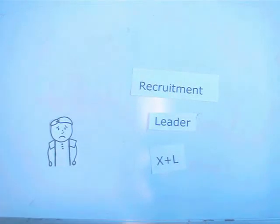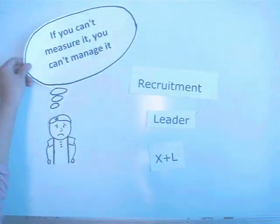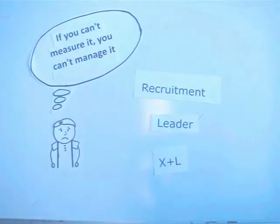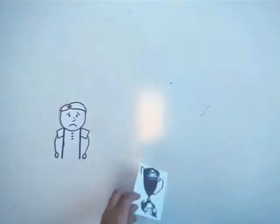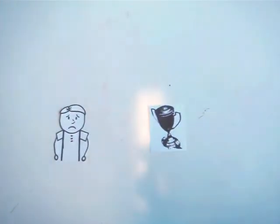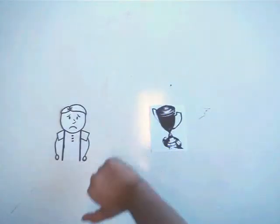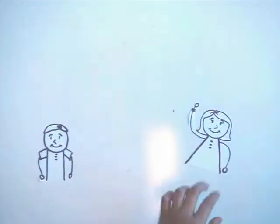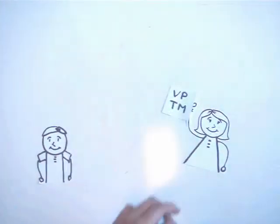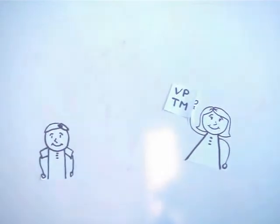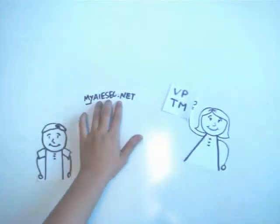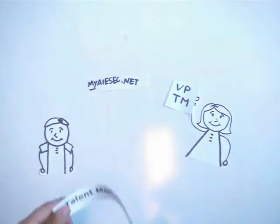Ted doesn't know how many members who were in leadership roles before could now go on exchange. He thinks to himself: if I can't measure it, I can't manage it. Ted is sad because his LC is not achieving its goals. But things changed when he met Robin, the VP TM of another LC — she's very happy.